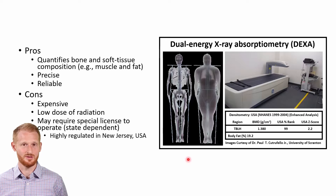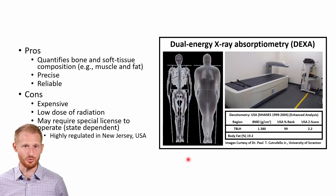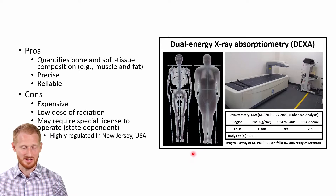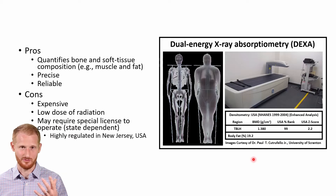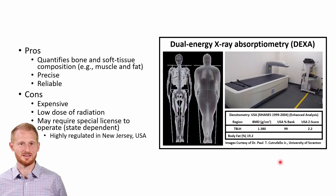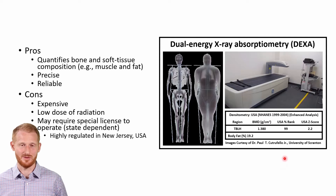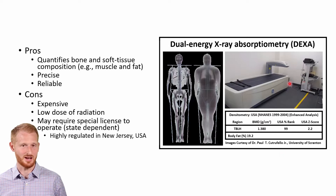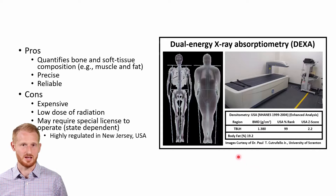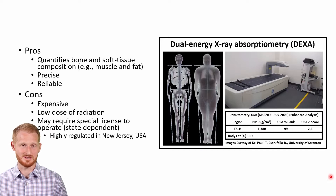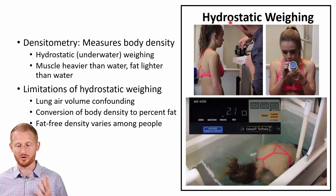If you go over the border into Pennsylvania, the rules are much more liberal — basically anybody can learn to use a DEXA machine in a few minutes. I've been told by people from companies that make these machines that the radiation dose is equivalent to eating about four bananas, since bananas contain potassium with a radioactive component. So it's a very low dose of radiation, probably not a big concern, but some governmental bodies have decided to regulate it pretty tightly.